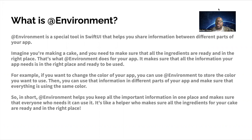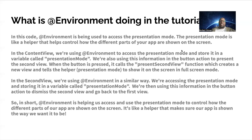@Environment helps you share information between different parts of your app. Imagine you're making a cake and you need to make sure all the ingredients are in the right place — that's what @Environment does. For example, if you want to change the color of your app, you can use @Environment to store the color, then use that information across parts of your app to make sure everything uses the same color.